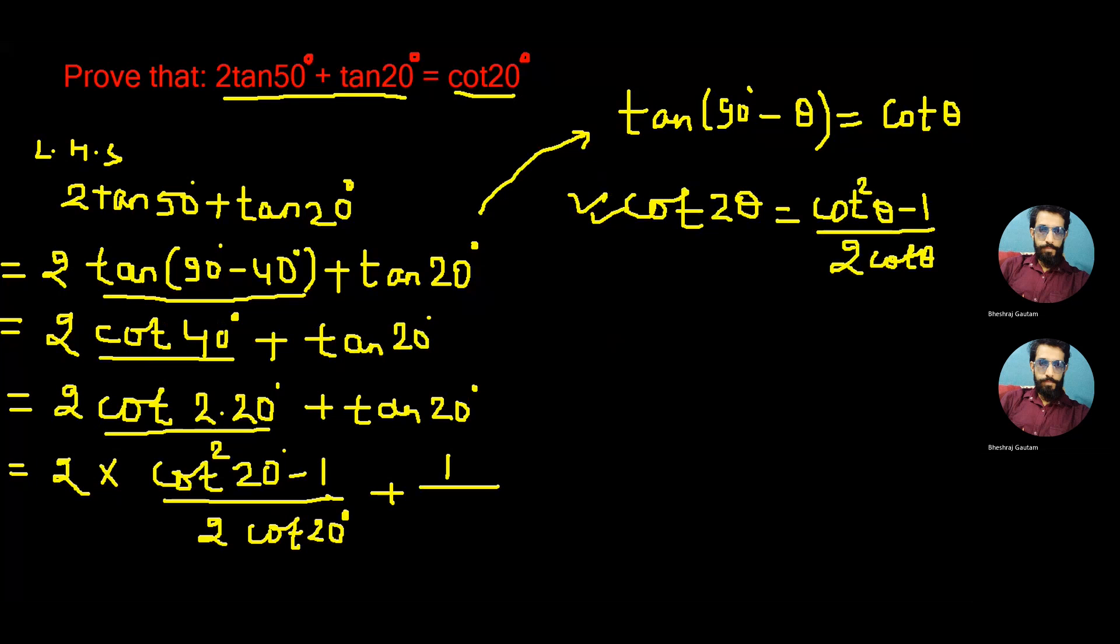written as 1 divided by cot20°, which is similar to tanθ is equal to 1 upon cotθ. This 2 and this 2 can be cancelled. Now doing all this we are very close to our answer.